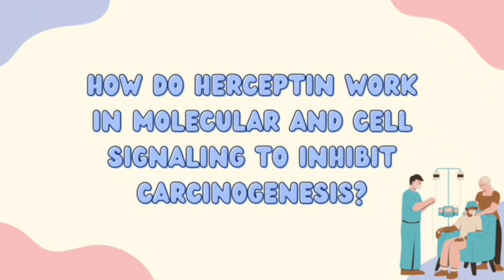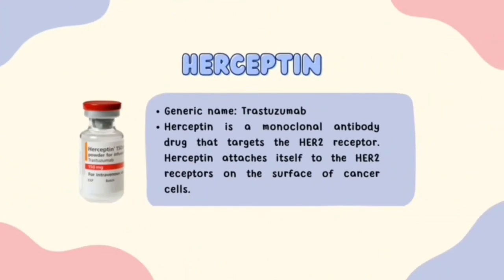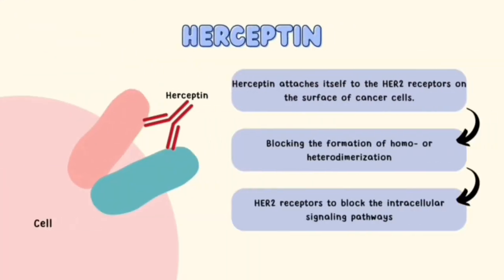One of these is trastuzumab, the generic name for Herceptin. Herceptin is a monoclonal antibody drug that targets the HER2 receptor. Herceptin attaches itself to the HER2 receptors on the surface of cancer cells and interferes with the HER2 receptor's ability to dimerize with other HER receptors by targeting its juxtamembrane domain. By separating HER2 from the other receptors, this prevents the production of homo- or heterodimers, blocking intracellular signaling pathways and preventing further growth and proliferation of cancer cells.